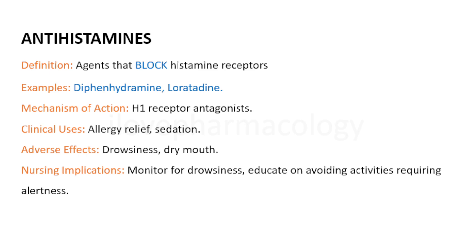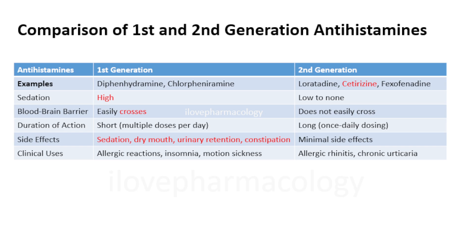Comparing first and second generation antihistamines: first generation examples include diphenhydramine and chlorpheniramine; second generation includes loratadine, cetirizine, levocetirizine, and fexofenadine. Sedative effect is high with first generation but low or none with second generation, because first generation drugs easily cross the blood-brain barrier while second generation do not. Duration of action is short with first generation requiring multiple daily doses, whereas second generation has longer duration requiring once-daily dosing.